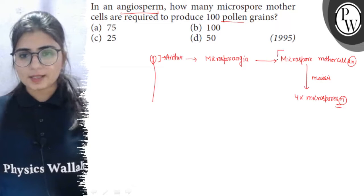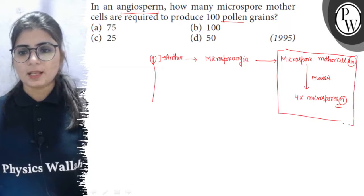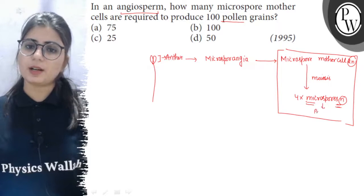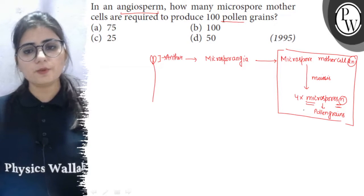So, here we can see that one microspore mother cell is forming four microspores and microspores develop into pollen grains. So, we can say that one microspore mother cell is forming four pollen grains.